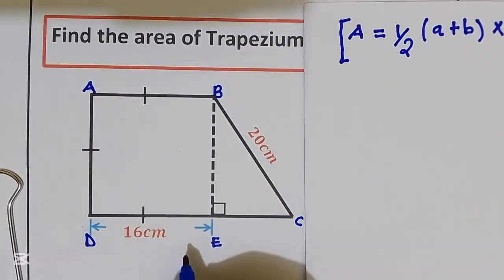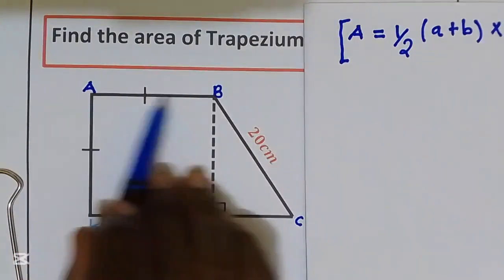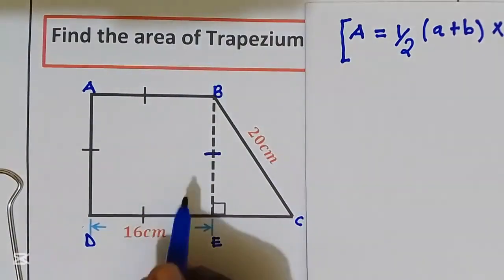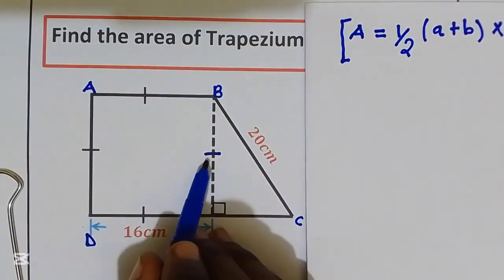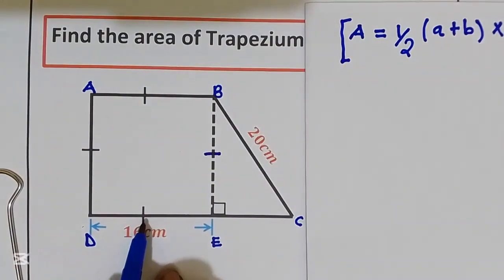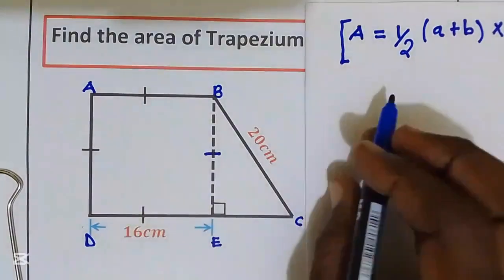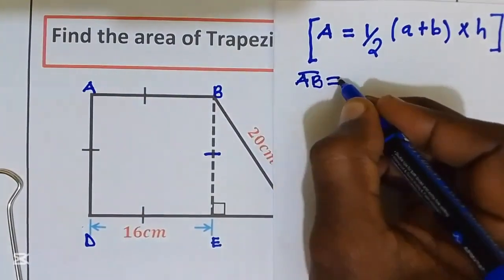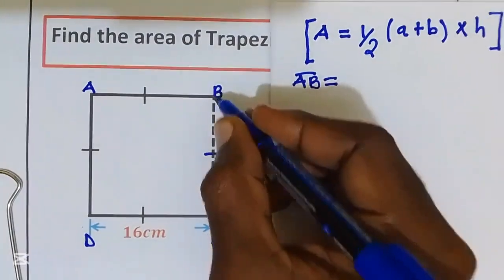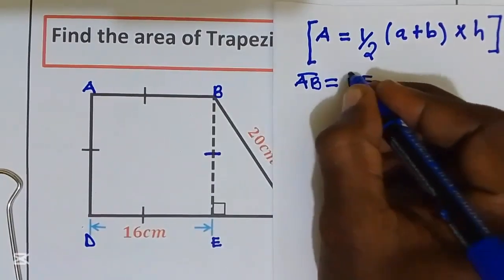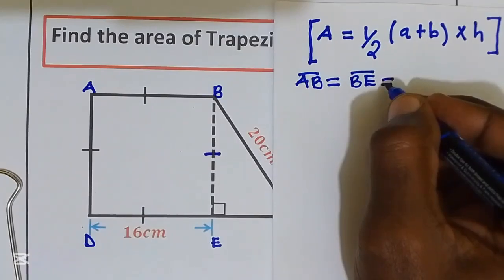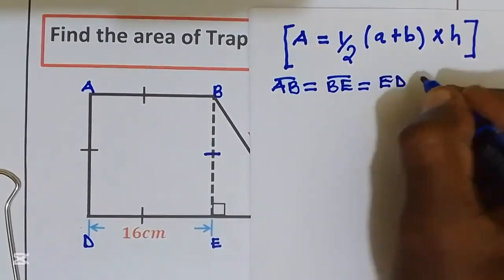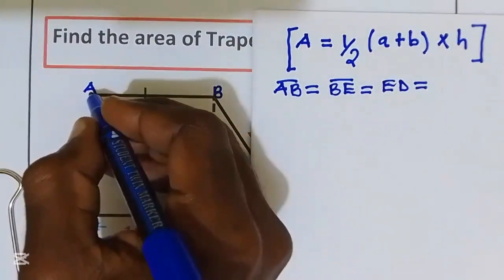Our trapezium has a square ABED. They give us these symbols to show that this is a square, so distance AB is equal to distance BE, which is equal to distance ED, which is equal to distance AD.